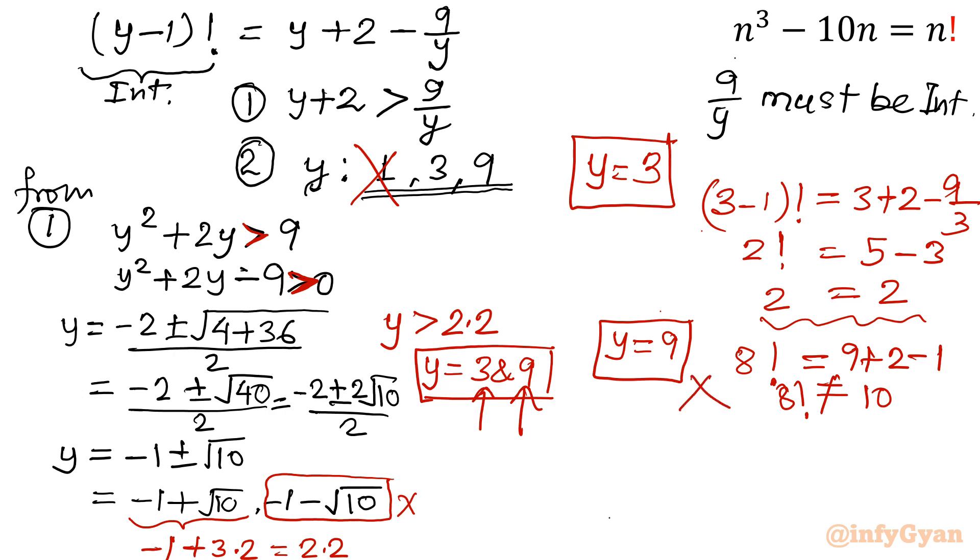So y = 9 is rejected. The correct value is y = 3. So what is our n? n - 1 = y. This was our assumption, our consideration. So n will be equal to y + 1. So y is 3, so n = 4. y = 3 means n = 4 is our solution.